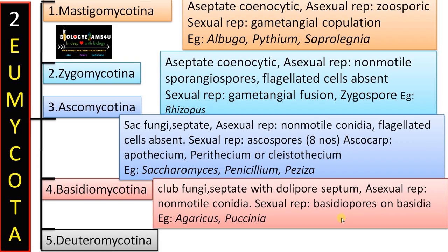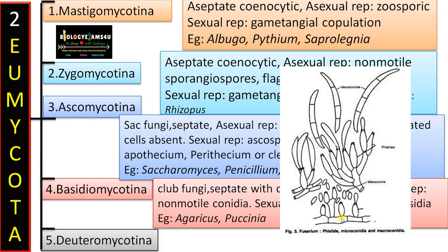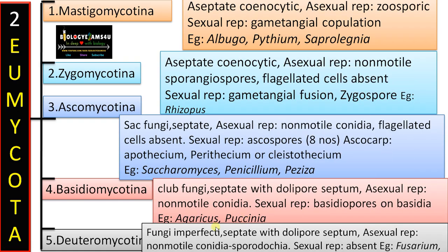The fifth subdivision is Deuteromycotina. They are called Fungi Imperfecti because sexual reproduction is absent. They reproduce only by means of conidia — macroconidia are crescent-shaped conidia, and the smaller ones are microconidia. They have well-developed septate mycelium with dolipore septum, similar to Basidiomycetes. Conidia are organized to form certain structures like sporodochia. Examples include Fusarium and Cercospora.